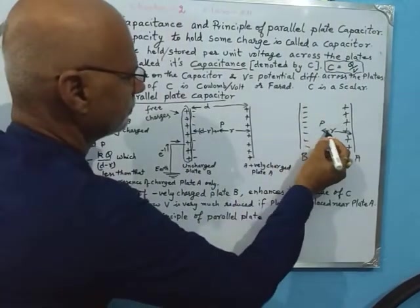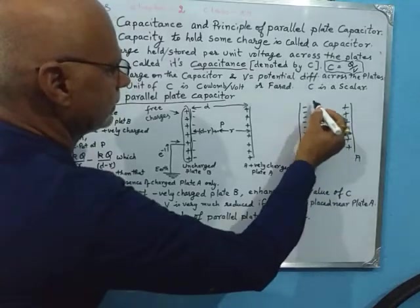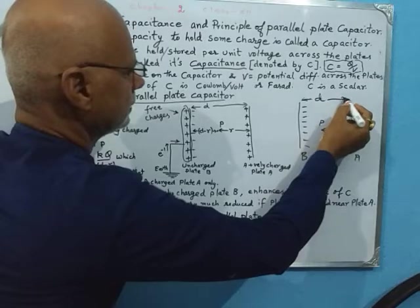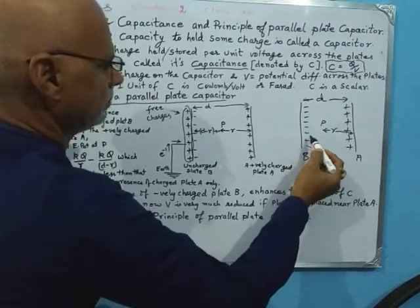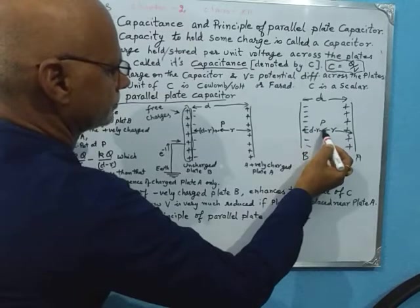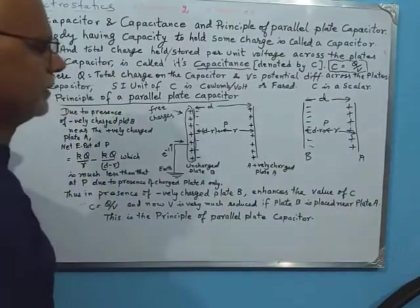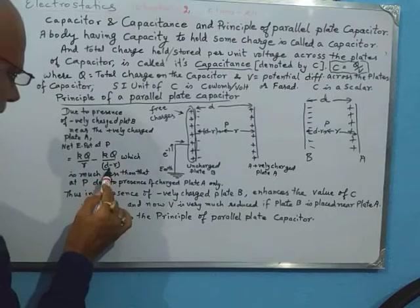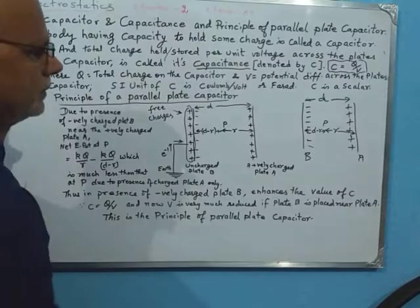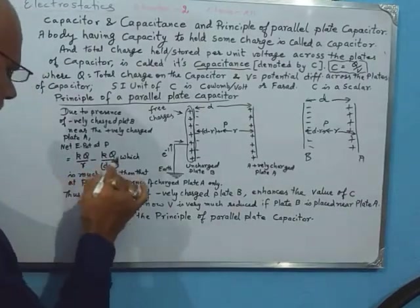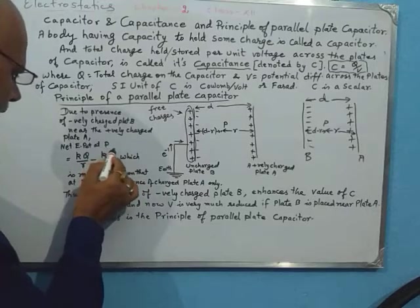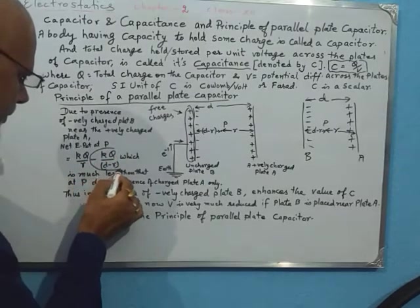Here, if P is at distance r from plate A and the total distance between the two plates is d, then P is at a distance (d minus r) from plate B. Since the charge on plate B is negative, we have minus kQ/(d minus r). Therefore the net electric potential at point P is decreased by an amount equal to kQ/(d minus r).